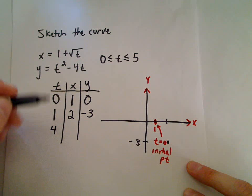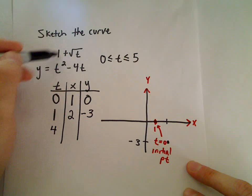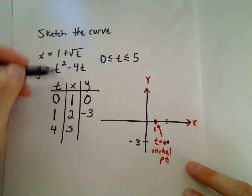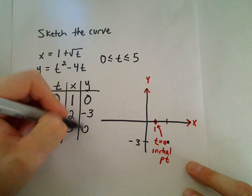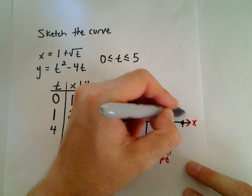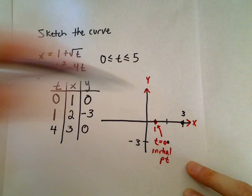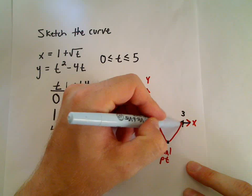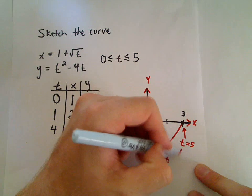Let's skip to t equals four because that's easy to take the square root of. We get x equals one plus square root of four, which is one plus two, or three. Then y equals four squared minus four times four, which is sixteen minus sixteen, or zero. So at x equals three we're back at zero. As t progresses, the x coordinate gets bigger and the y coordinate gets smaller then larger. The point corresponding to t equals five, since t is between zero and five, is called the terminal point.